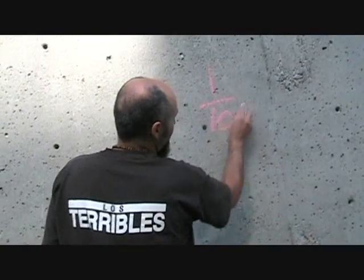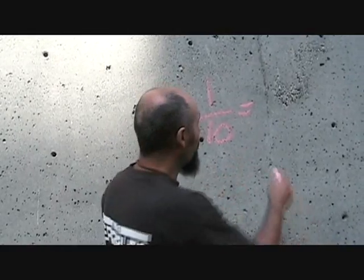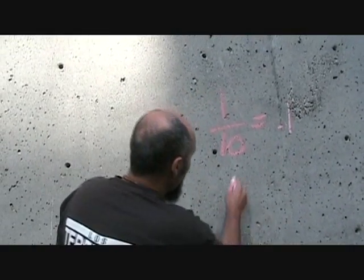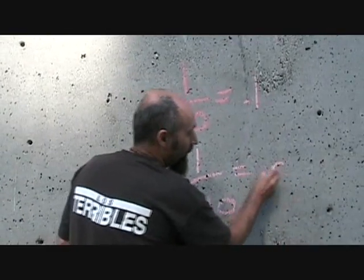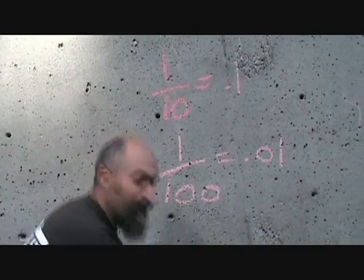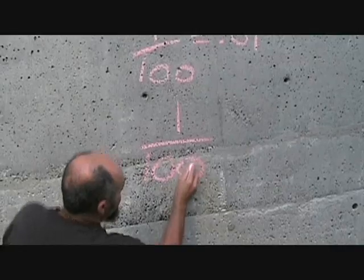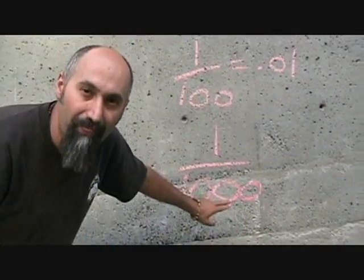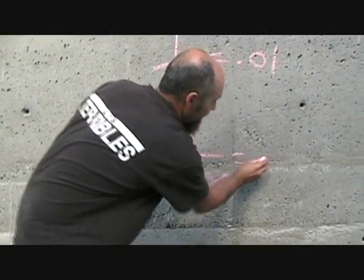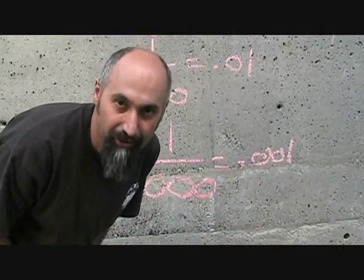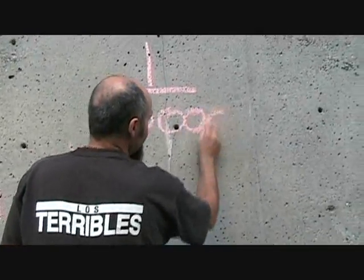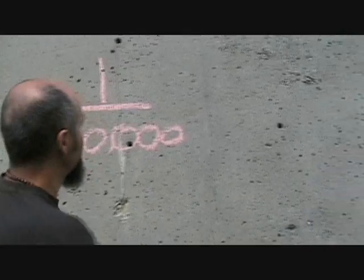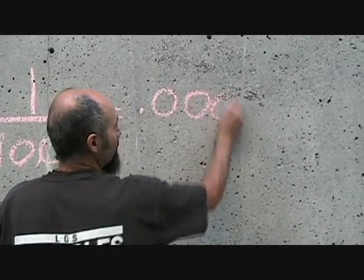Consider this: 1 divided by 10 is 0.1. 1 divided by 100 is 0.01. 1 divided by 1,000 is 0.001. You get the gist, right? Let's go a little further — 1 divided by 10,000 is 0.0001.